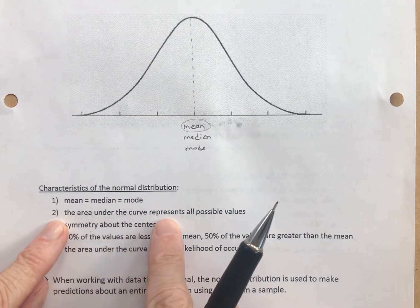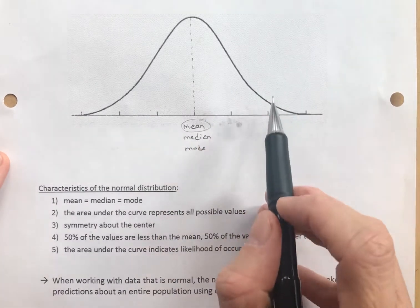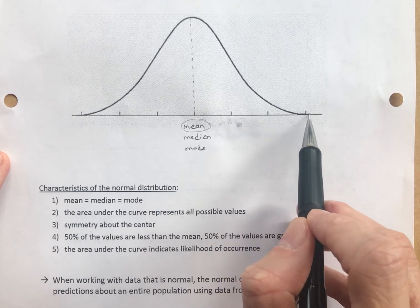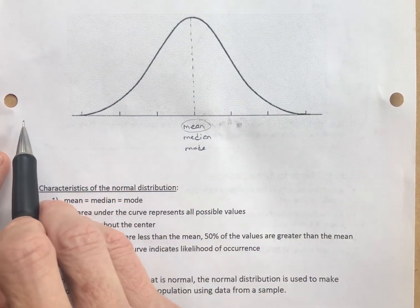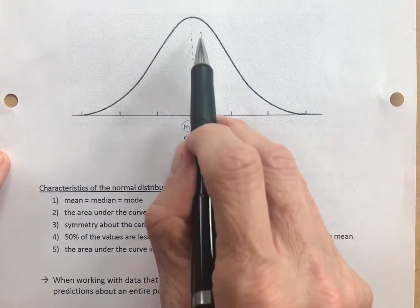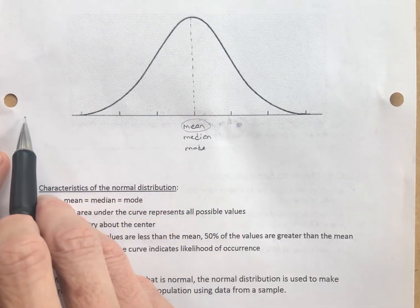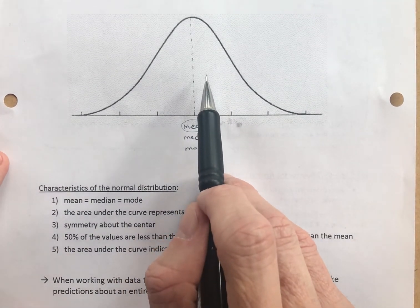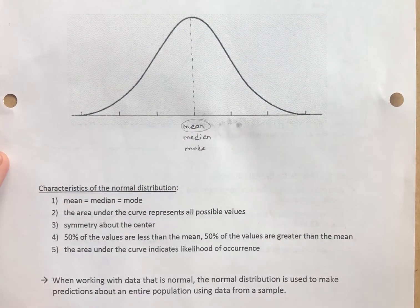Number two: the area under the curve represents everything. Even though this looks like it hits the x-axis, it never does actually — it goes on and on and on, getting closer and closer on both sides. But the area under this curve, going on to infinity and to negative infinity, represents everything. Everybody is under the curve — 100% of all data is represented by the area under this curve.